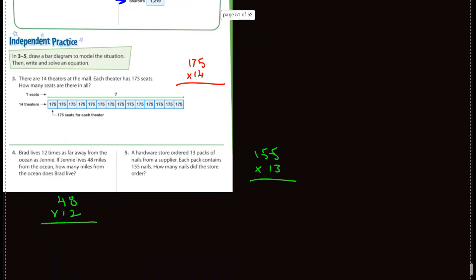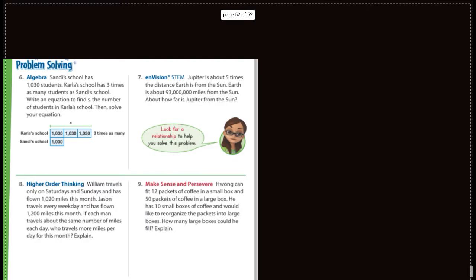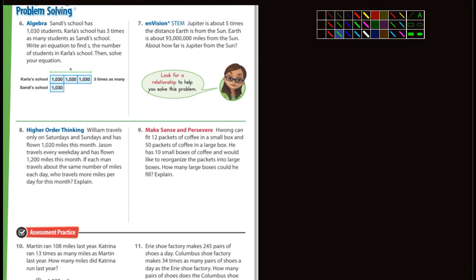Let's see here. Let's move down to problem solving. Let's take a look at these. Sandy's school has 1,030 students and Carla's has three times as many. Write an equation to find S, that's the number of students probably in Carla's school. Then solve your equation. So what would that be? It'd be 1,030 times three.